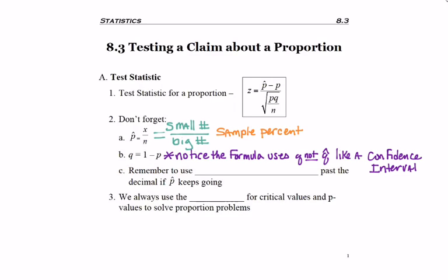Also, don't forget that we need to use at least five digits past the decimal when calculating P-hat, in the event that it's a non-ending decimal. This is to prevent round-off error.